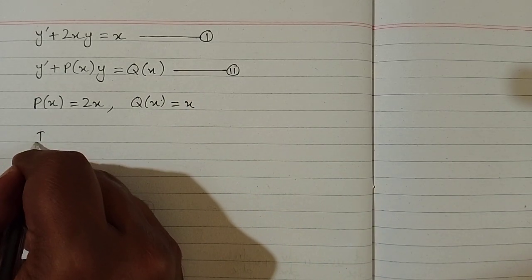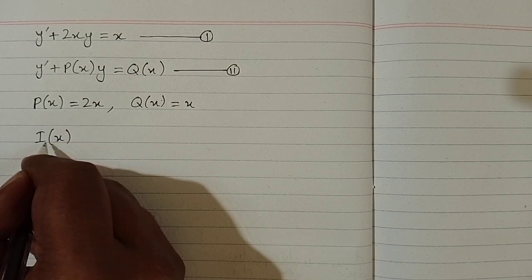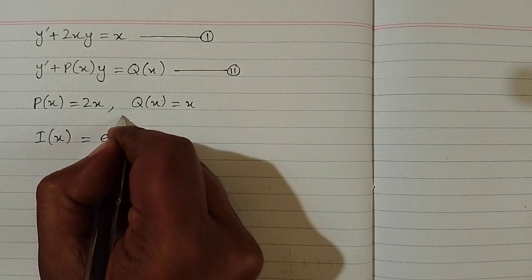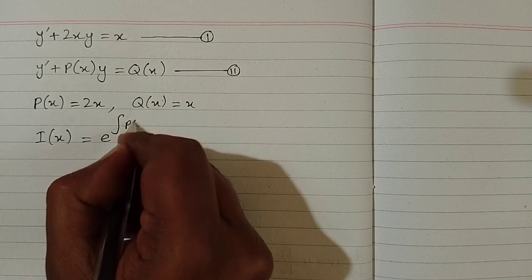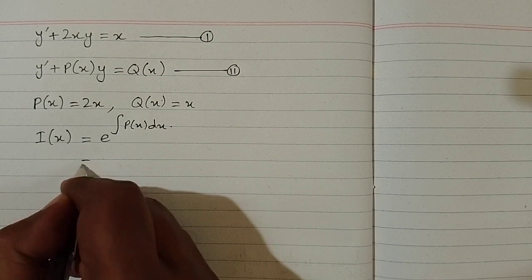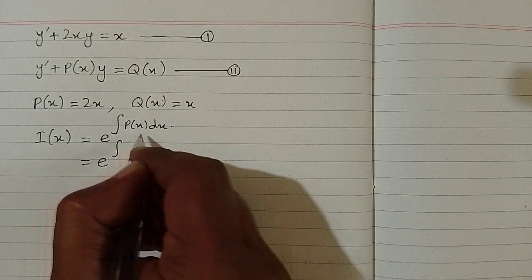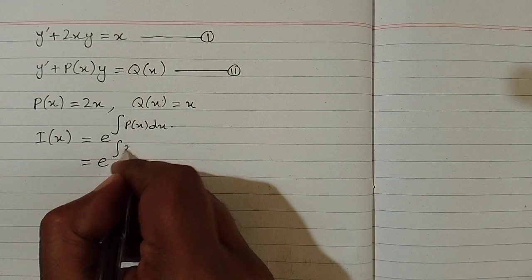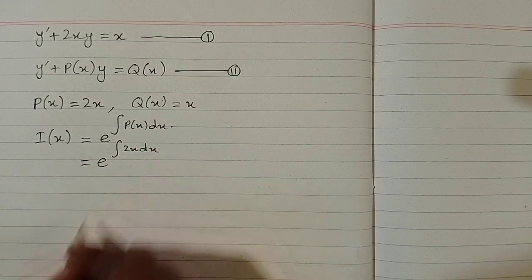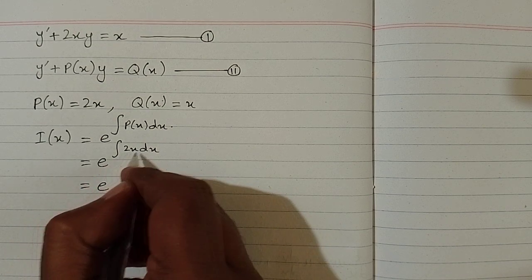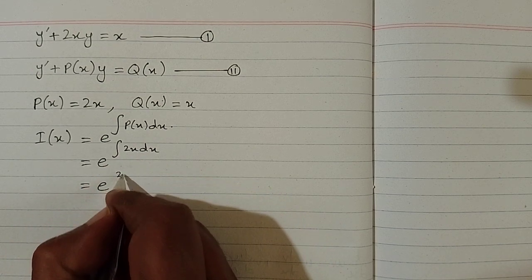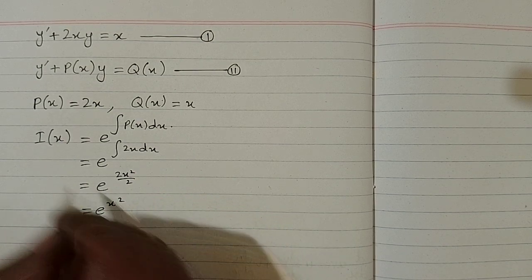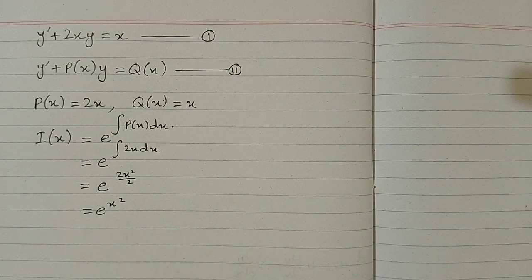Now we will find the integrating factor, which is a function of x. Say i(x) = e to the power of the integral of p(x) dx. Substituting p(x) = 2x, we have e to the power of the integral of 2x dx. The integral of 2x is x², so the integrating factor is e^(x²).